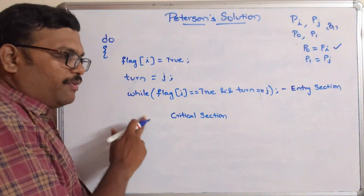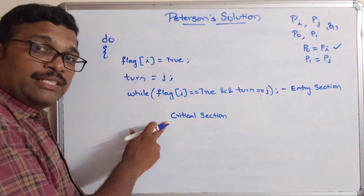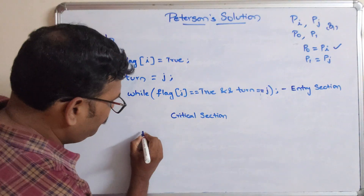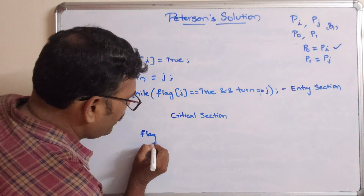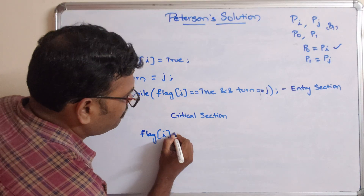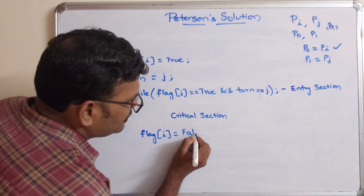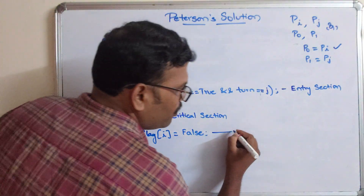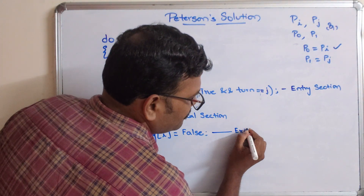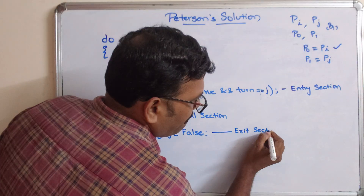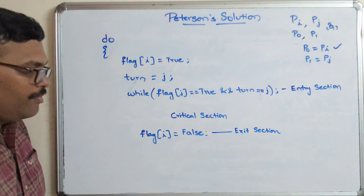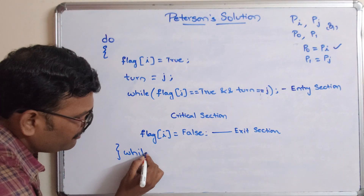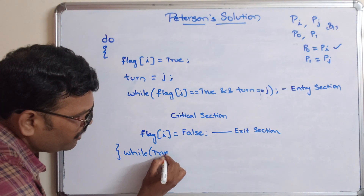Whenever the loop is terminated, process I will enter into the critical section. Once the execution is complete, flag[I] becomes false. This is called the exit section.